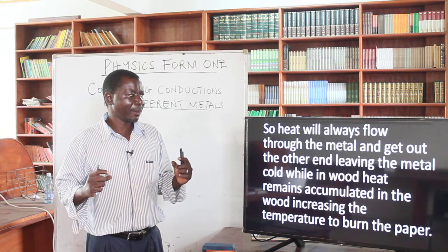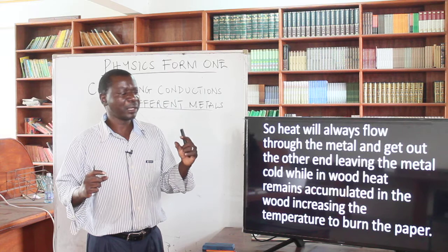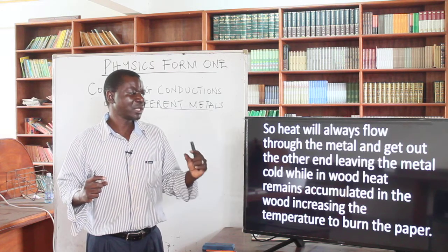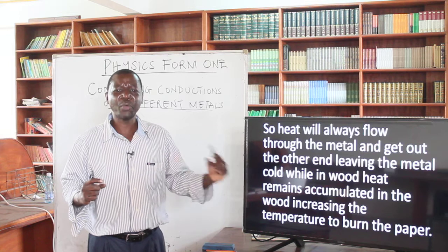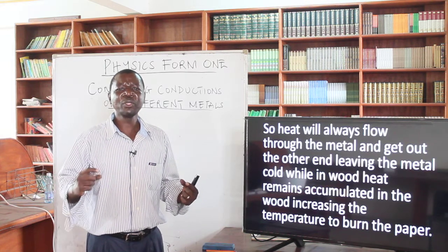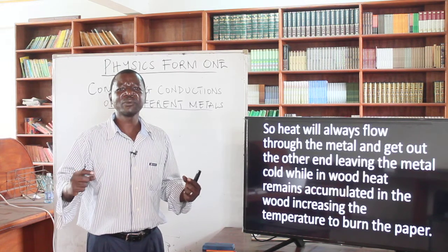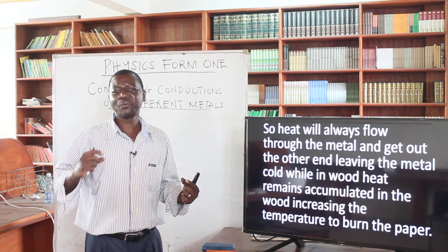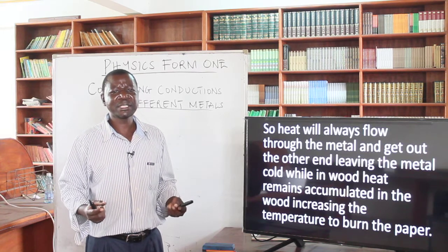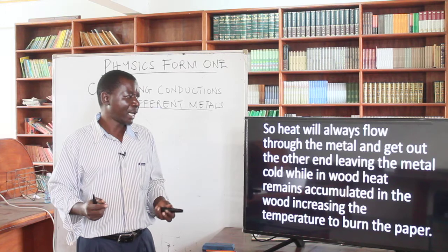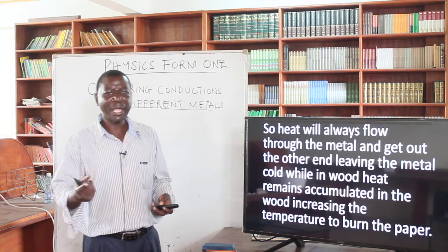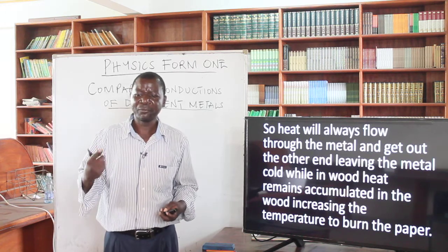In other words, an insulator does not allow heat to flow away — it accumulates the heat. A good conductor allows the heat to flow away to the surroundings. That is the essence of the comparison of heat conduction for iron and wood.